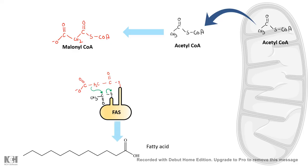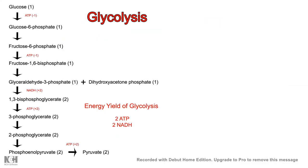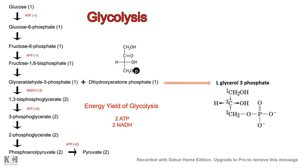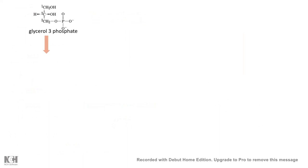These fatty acid chains are available in the cytoplasm for attaching to the glycerol backbone. In glycolysis, from glucose, glyceraldehyde-3-phosphate and dihydroxyacetone phosphate are produced. From dihydroxyacetone phosphate, glycerol-3-phosphate can be generated enzymatically. Alternatively, glycerol-3-phosphate can be generated from glycerol with enzymatic help.